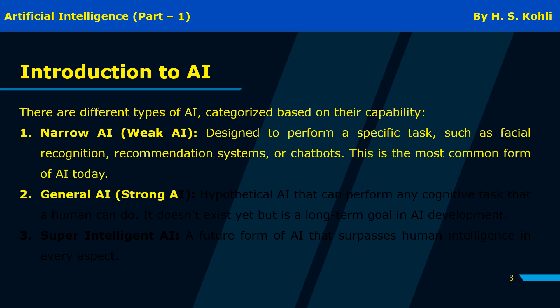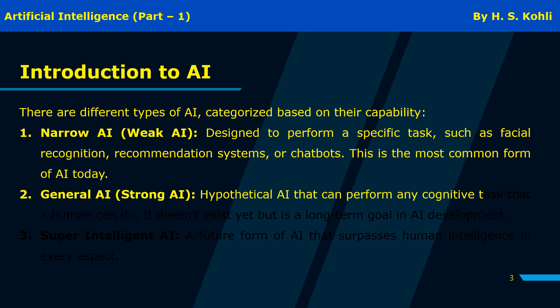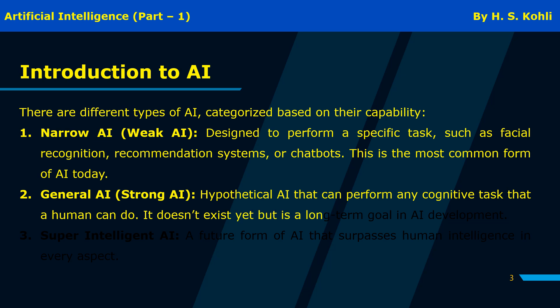Second, General AI — also called strong AI — is a hypothetical AI that can perform any cognitive task that a human can do. It doesn't exist yet, but is a long-term goal in AI development.